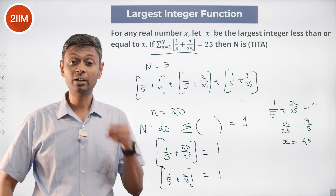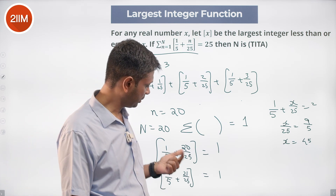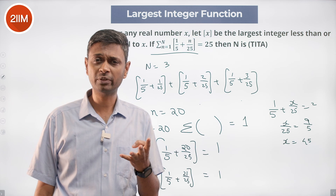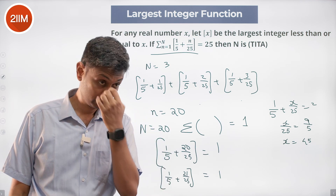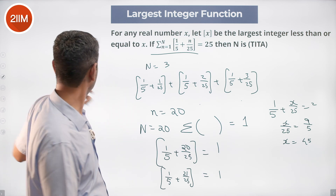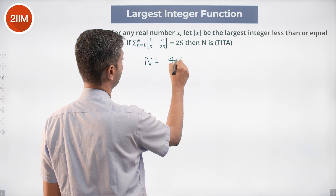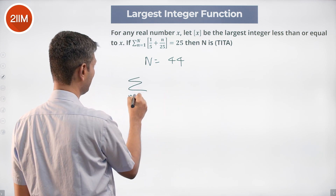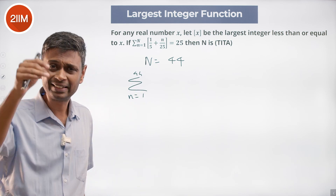From n=20 through n=44, the floor value is 1. Starting from 20, 21, 22, 23, 24 ... all the way till 44, each term gives 1. So from n=1 to 19 there is nothing (all zeros), then from 20 to 44 we get 1s.